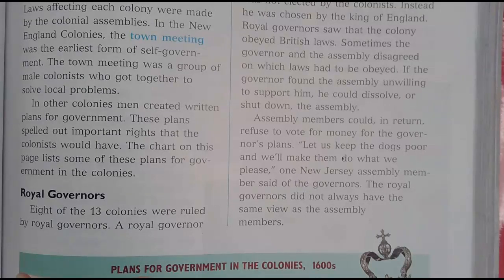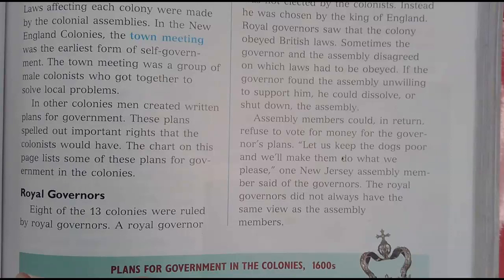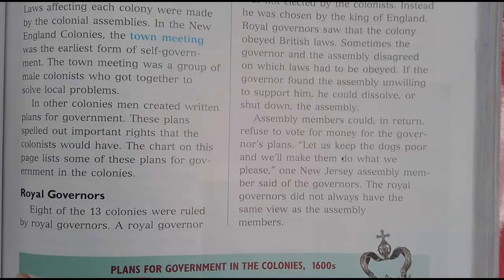One New Jersey assembly member said of the governors: 'Let us keep them poor and we'll make them do what we please.' The royal governors did not always have the same view as the assembly members. If I'm the governor and you're the people helping me make decisions — if I disagree with your choices, I can make your lives pretty miserable. But if I need money for something, you could say, sorry Ms. Richardson, we're not going to vote for you to get money for new laptops. Even though I think this is what should happen, you guys can kind of stop me by not giving me the money.